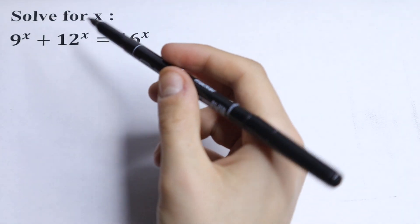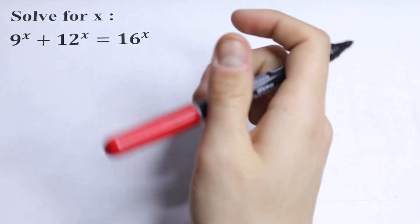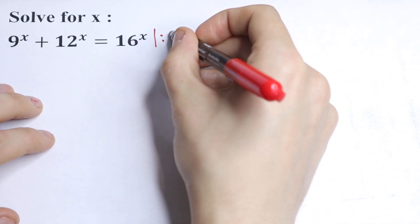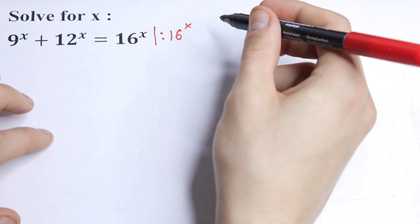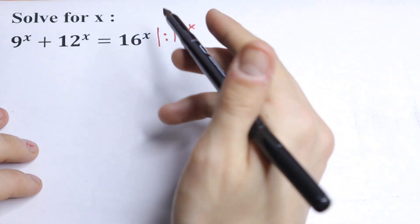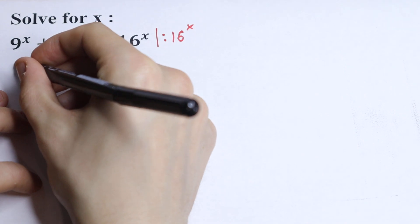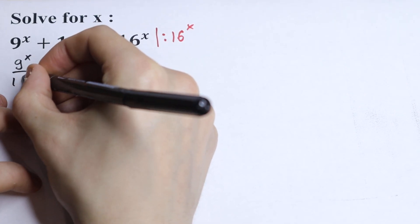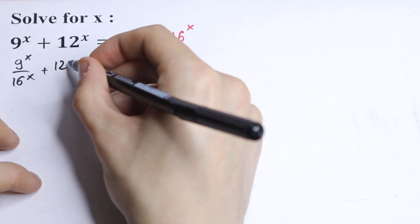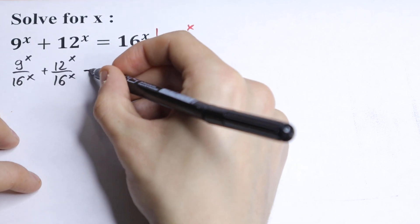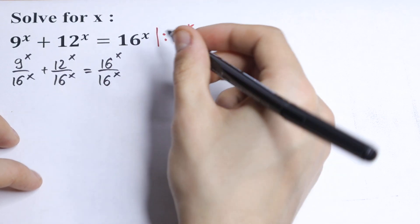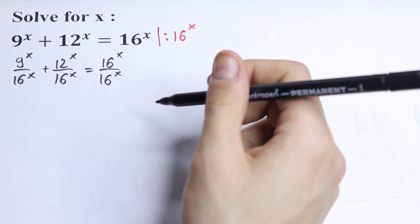The main idea to solve this kind of exponential equation is to divide both sides by — in our case, let's divide both sides by 16 to the power x. Since 16 to the power x is of course not equal to 0, we can do this. So we get 9^x over 16^x plus 12^x over 16^x equal to 16^x over 16^x.